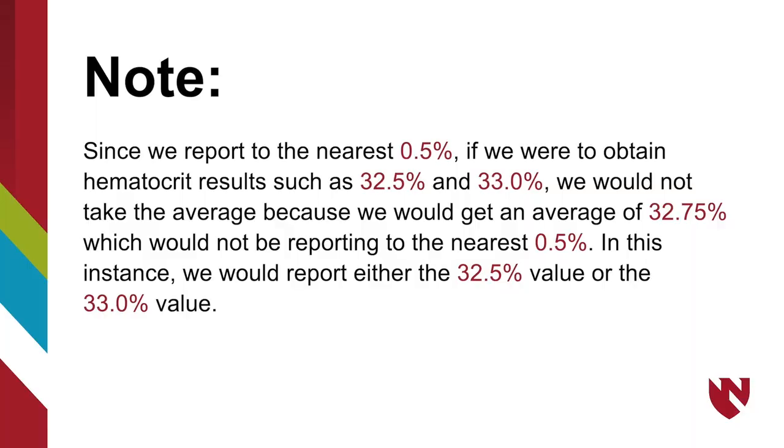Since we report to the nearest 0.5 percent, if we were to obtain hematocrit results such as 32.5 percent and 33.0 percent, we would not take the average because we would get an average of 32.75 percent, which would not be reporting to the nearest 0.5 percent. In this instance, we would report either the 32.5 percent value or the 33.0 percent value.